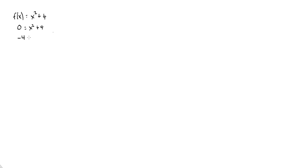I'll subtract four from each side and I'll get x squared equals negative four. And you know that to get rid of a square, we have to square root both sides. So I get plus or minus the square root of negative four.